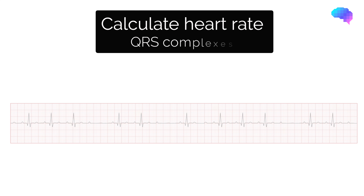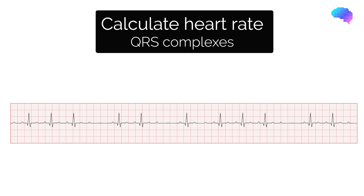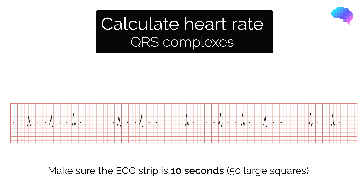This second method is useful when the heart rhythm is irregular. In this situation, we can't use the RR interval method as the RR interval will vary. To use this method, you need to make sure you're dealing with a standard ECG strip, which is typically 10 seconds long or 50 large squares.